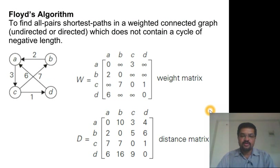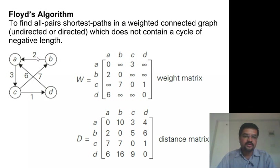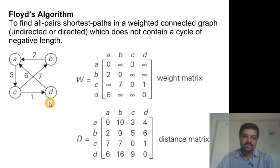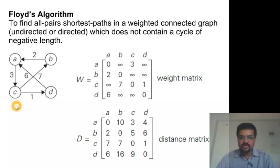Now let's see another algorithm — Floyd's algorithm. This is very similar to Warshall's algorithm in structure, and it tries to solve the all-pairs shortest paths problem. In a weighted digraph, where we have a weight matrix with the edge weights, this algorithm finds the shortest path between every pair of vertices. Typically we are interested in finding the shortest path from one vertex i to vertex j, but this algorithm finds shortest paths from every vertex to every other vertex. So it finds on the order of n-squared shortest paths in one shot.